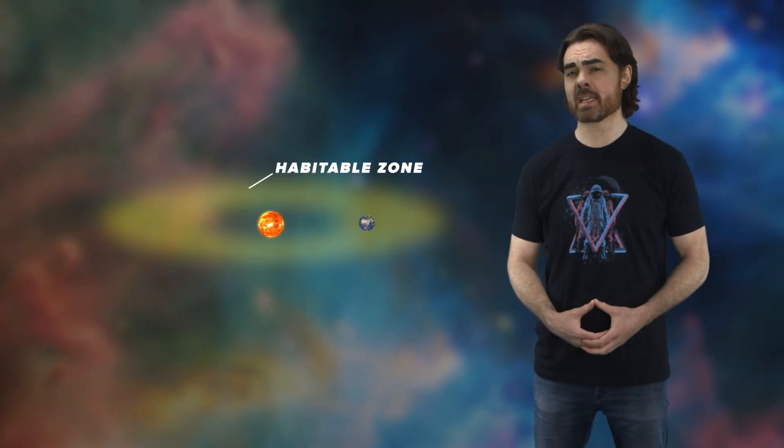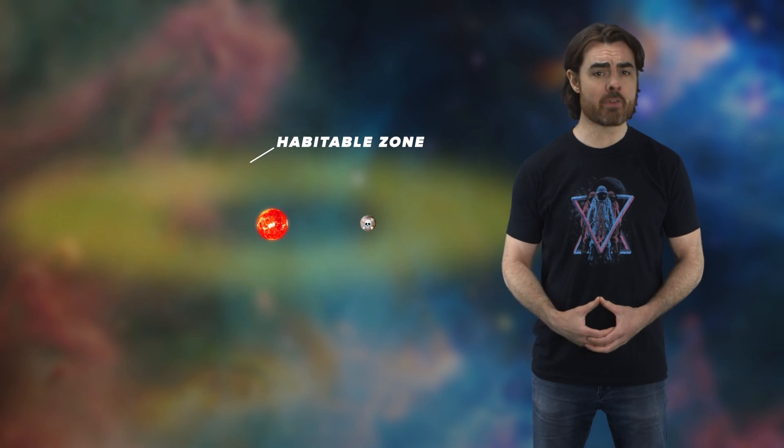We somehow persist through the gradual heating of our sun and the evaporation of our oceans. Our descendants cling to existence through the countless generations as we watch the Andromeda galaxy merge with the Milky Way, forming a vast elliptical galaxy.